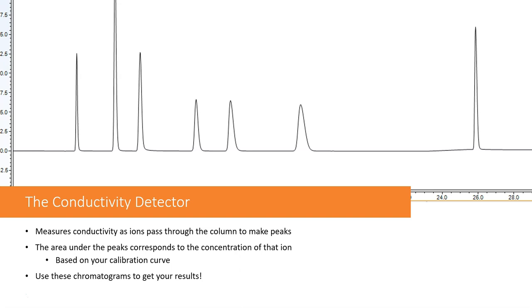The area underneath these peaks correspond to the concentration of that ion, and this is based on your calibration curve which we'll talk about how to make in the next video. You use these chromatograms to get your result. So your area corresponds to a concentration, and the Chromelion software will automatically make an Excel file that you can use to analyze your data.